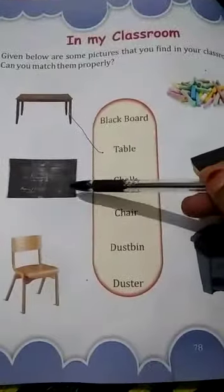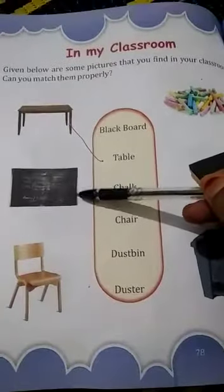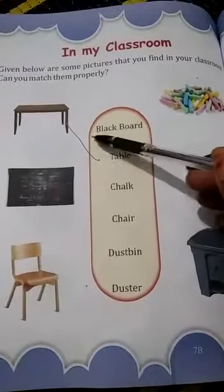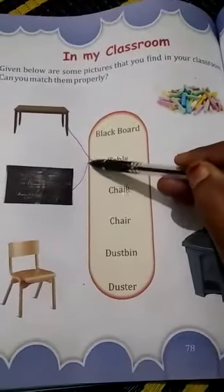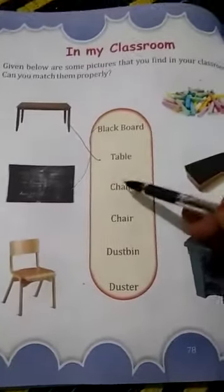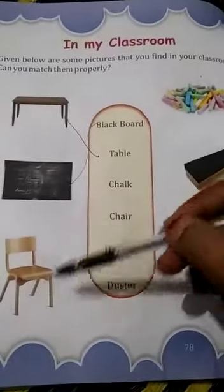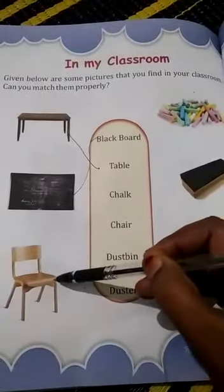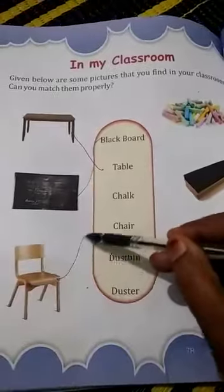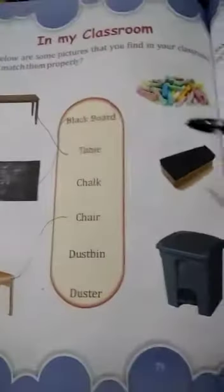Next one is a blackboard. B — black, B for blackboard. This one is blackboard. Match it. Next is a chair — C-H, chair. This one is a chair, children. Match it.